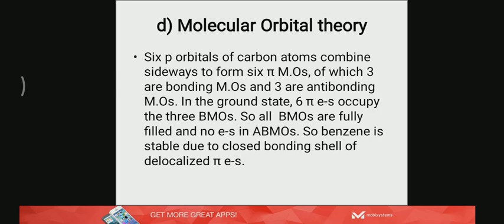How do we explain the stability of benzene with molecular orbital theory? Here we consider only the pi MOs formed by the six p orbitals of each carbon atom. As we have seen in VBT, the pi bond is formed by lateral overlapping of the p orbitals on each carbon.